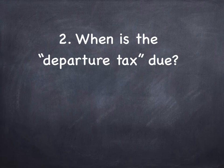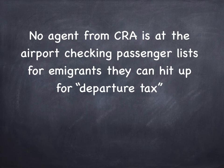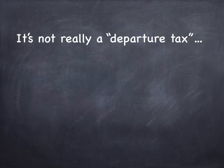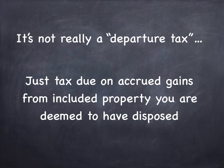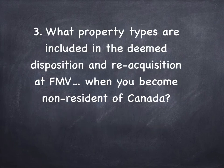When is the departure tax due? The term departure tax is a tiny bit misleading. There is no agent from CRA at the airport checking passenger lists for emigrants they can hit up for a departure tax. Departure tax is due just on the normal filing date, April 30th, on your last return that you file as a resident of Canada. It's not really a departure tax per se — it's just tax due on accrued gains from included property that you are deemed to have disposed. Departure tax is not triggered by you moving to a new country; it's triggered by you becoming a non-resident of Canada.